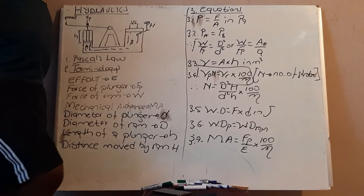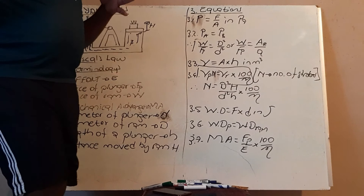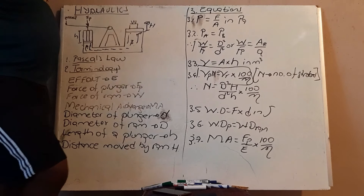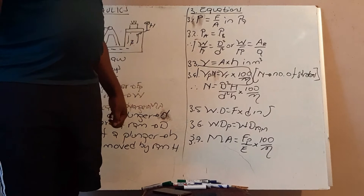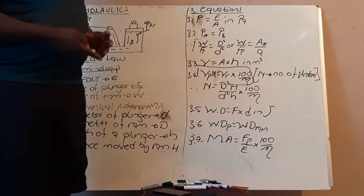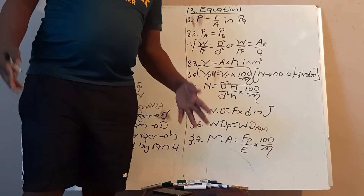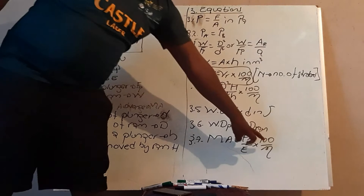Mechanical advantage is the ratio of output force over input force. If your mechanical advantage is 5, that means your output force is five times more than your input effort. For a press machine, mechanical advantage equals W over Fp. The mechanical advantage formula for a lever is Fp over effort times 100 over efficiency — if efficiency is not given, you ignore it.